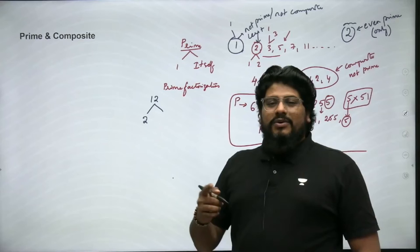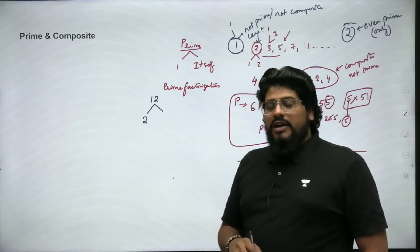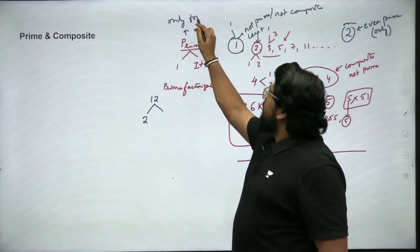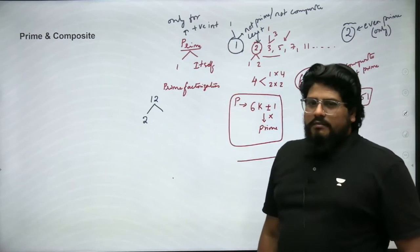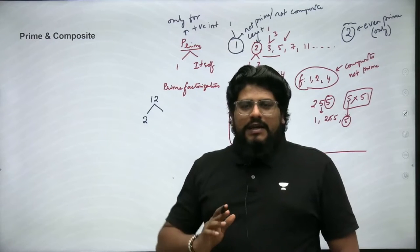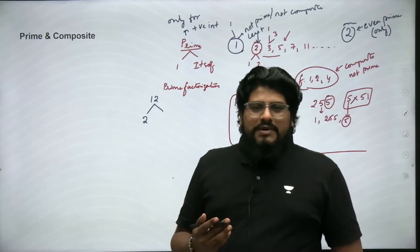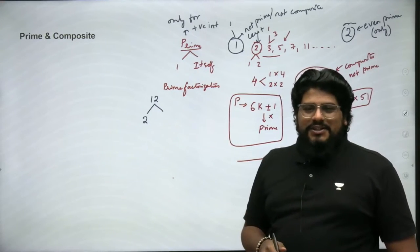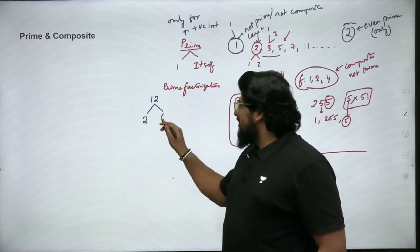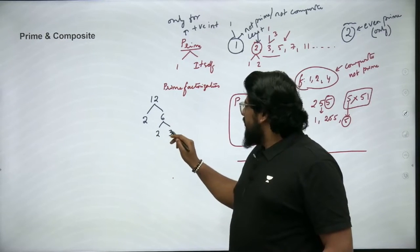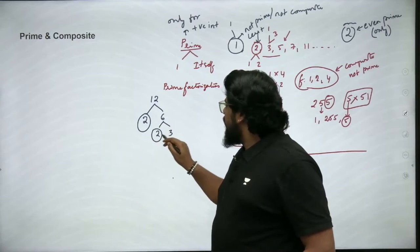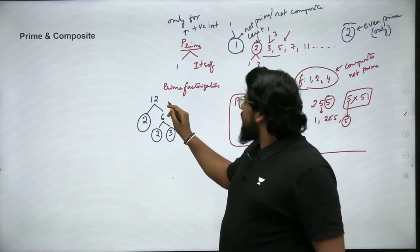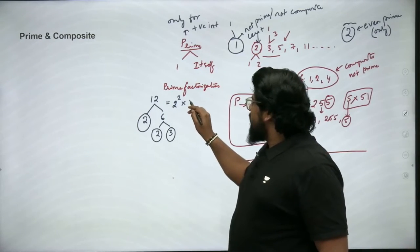Every other prime number is an odd number except 2. One is neither prime nor composite, 2 is the only even prime and it is the least prime number. Why not 0 or minus 1? Remember, prime and composite exist only for positive integers. Now let us come back to prime factorization. Prime factorization of 12: the least prime is 2, so 2 goes into 12 giving 6, and 6 further divides into 2 and 3.